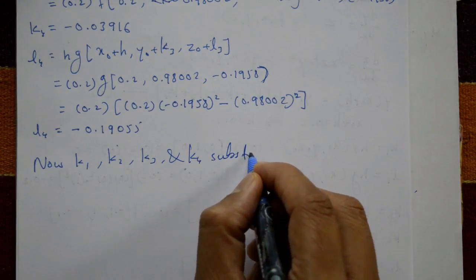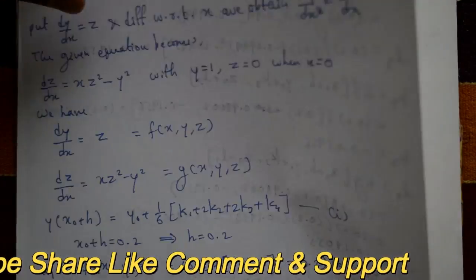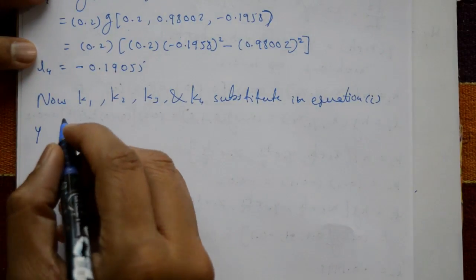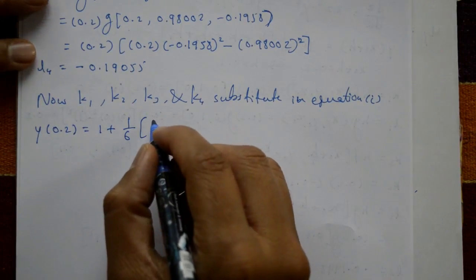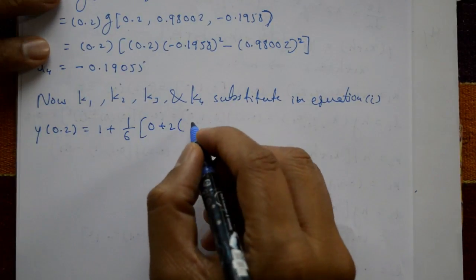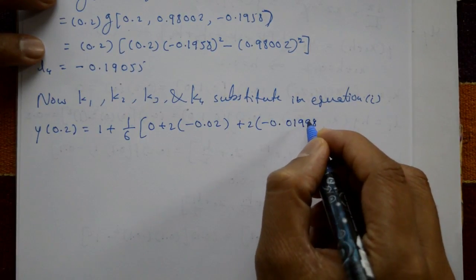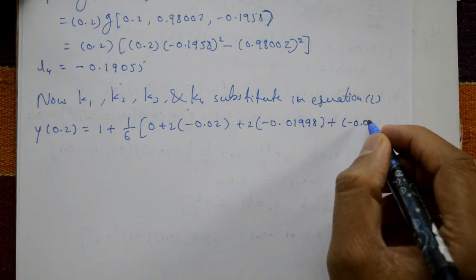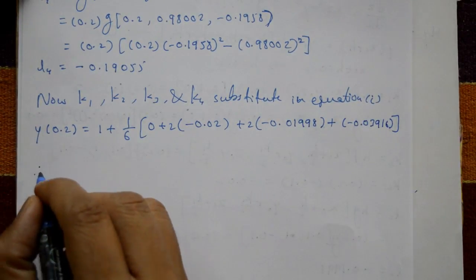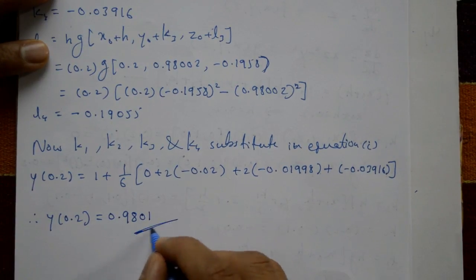Substituting k1, k2, k3, k4 into the formula: y(0.2) = y₀ + (1/6)(k1 + 2k2 + 2k3 + k4) = 1 + (1/6)(0 + 2(-0.02) + 2(-0.01998) + (-0.03916)). Therefore y(0.2) = 0.9801. This is the required solution.